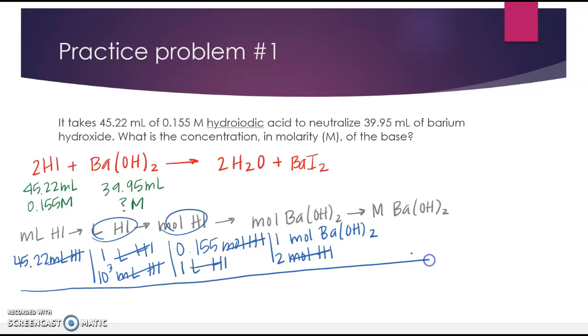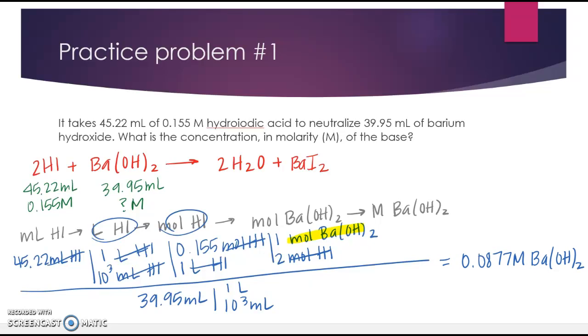And then in the bottom, because now I have moles of barium hydroxide, which is what I wanted in the top. And then now I need liters in the bottom. But all they give me is milliliters. So I need to convert that to liters. And then now you're just plugging all of that into your calculator. So after you plug that into your calculator, you should get that the molarity of barium hydroxide is 0.0877. You want three sig figs.